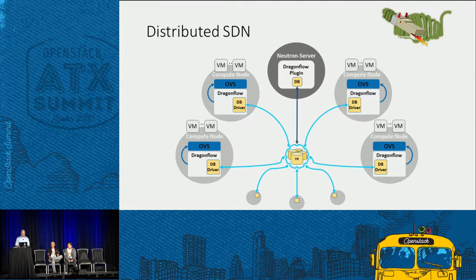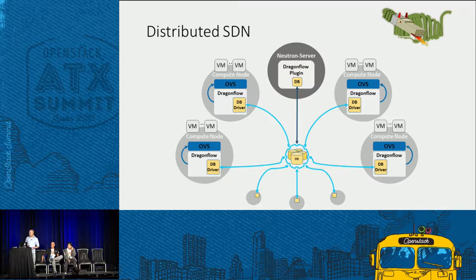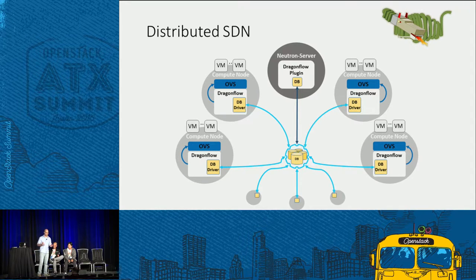Our Dragonflow environment looks like this. We have a local Dragonflow controller sitting at each of the compute nodes in our setup, and all of these controllers are synchronized with the logically centralized distributed database. This database holds policy-level information. The database is a pluggable database, so we can use any key-value database framework out there with Dragonflow, and I'll mention why this is important.